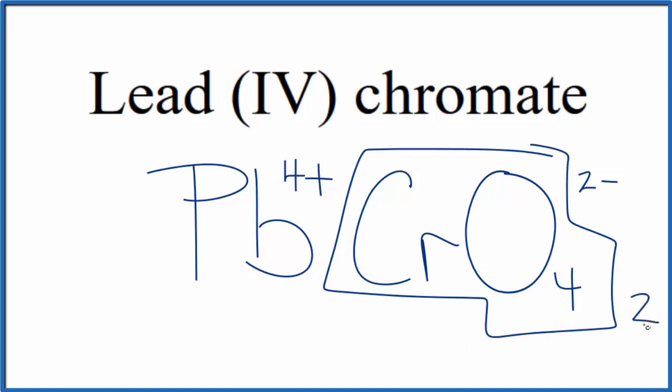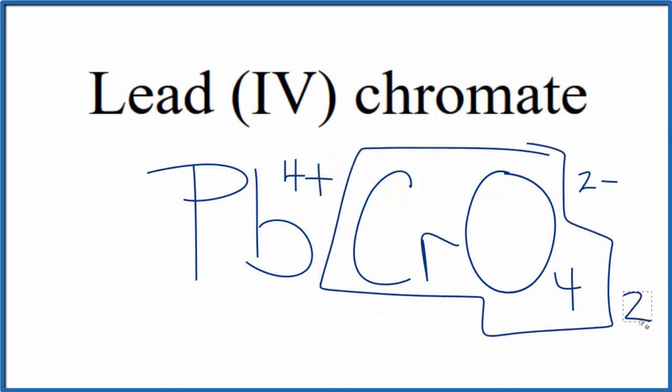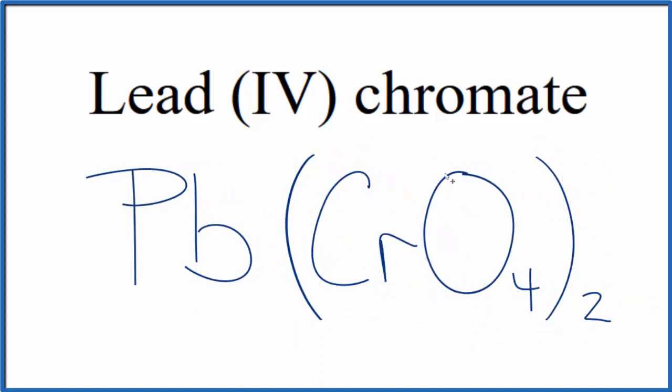So if we had two of these, 2 times 2-, that's 4-, that'd balance out the 4+. We would need to put parentheses around the chromate ion here, because we have two of them. And this is the formula for lead (IV) chromate, Pb(CrO4)2.